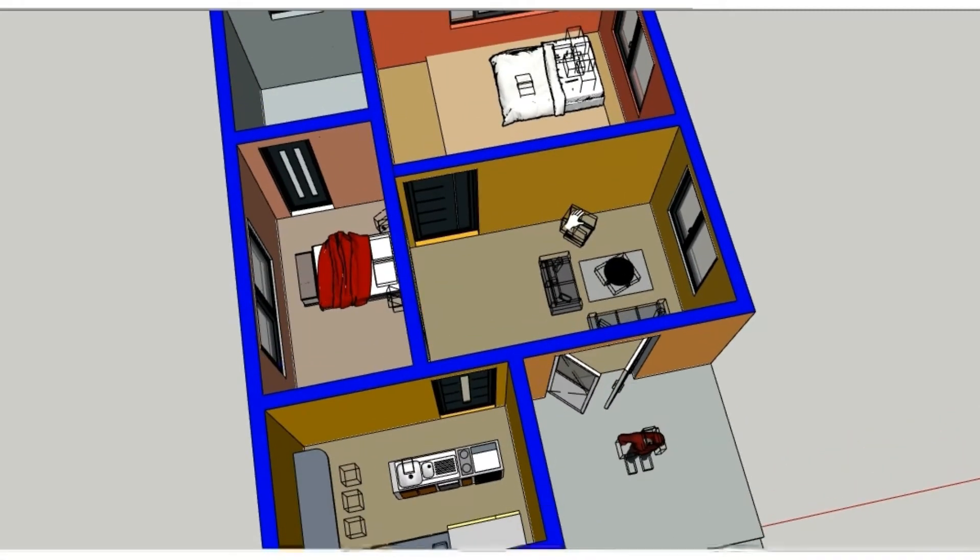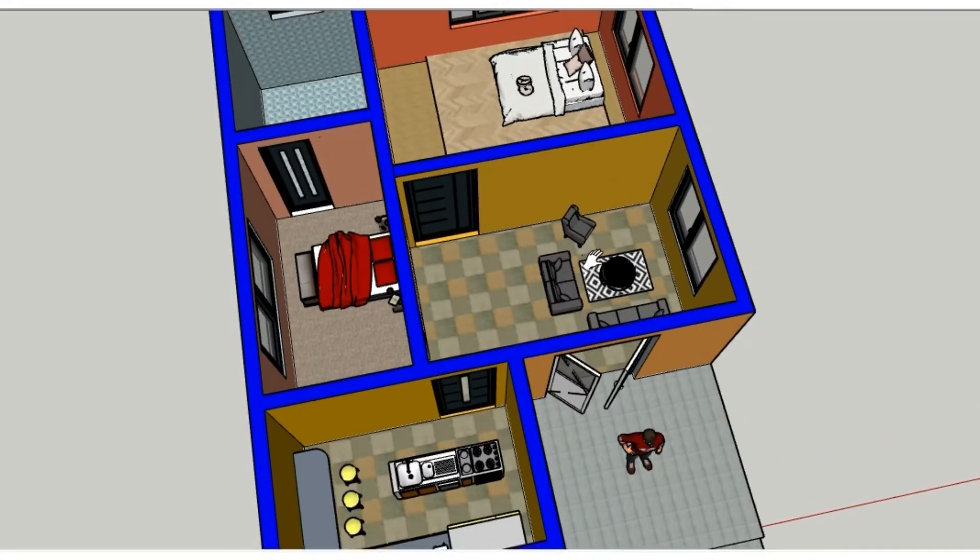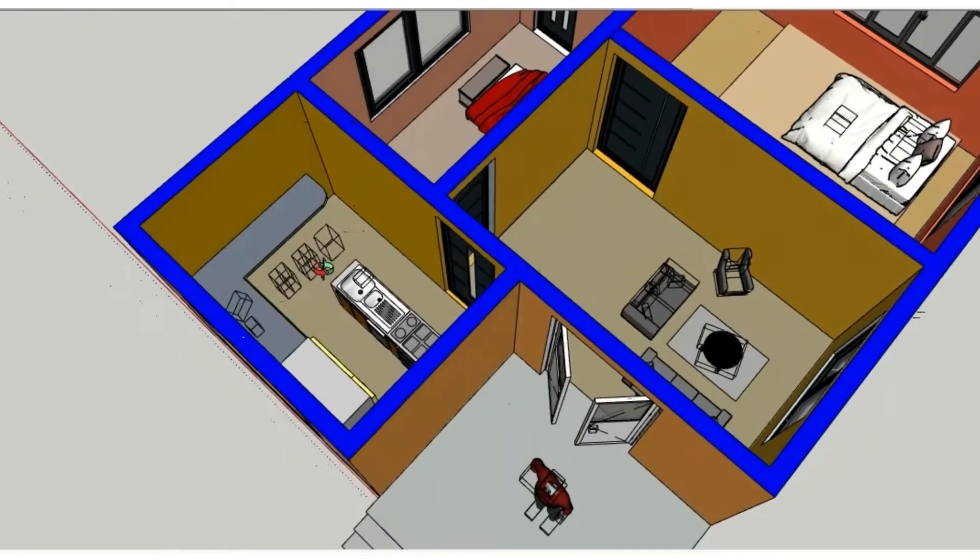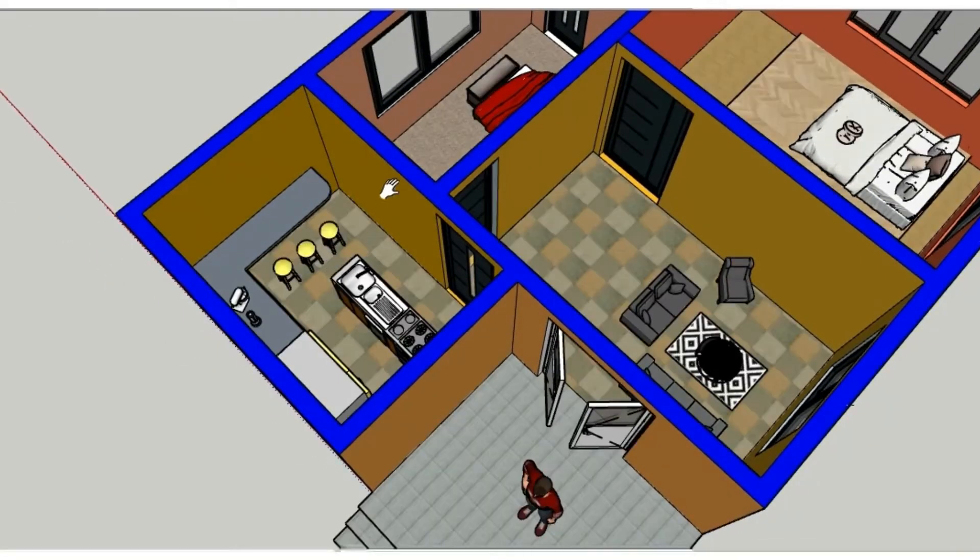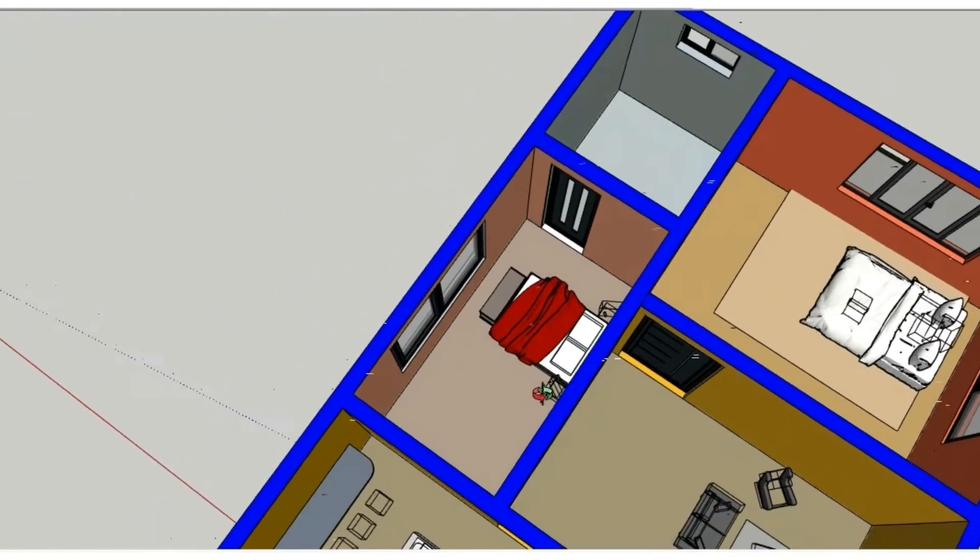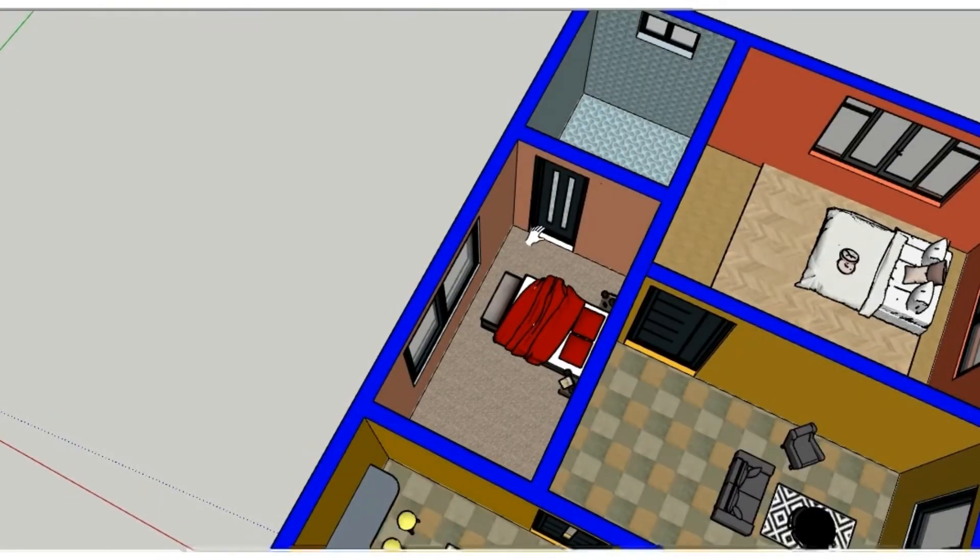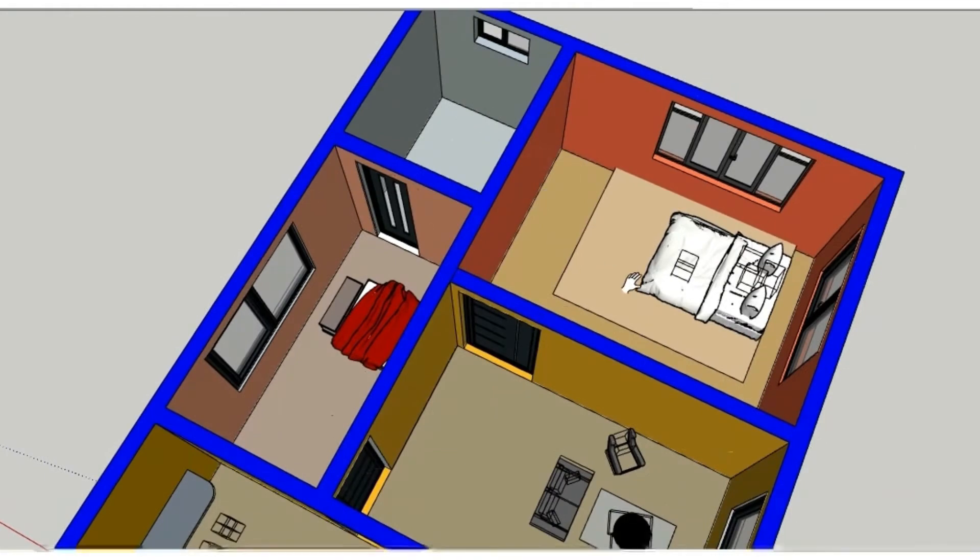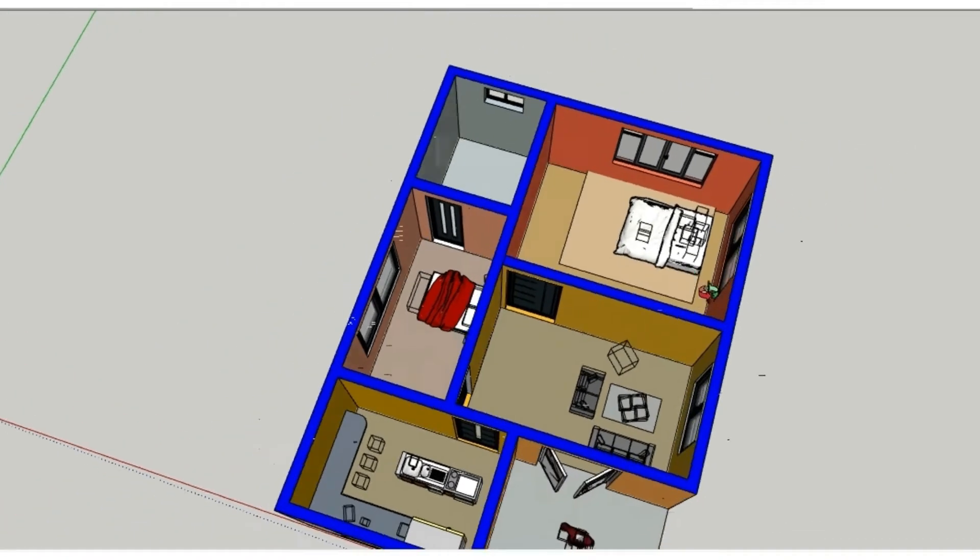At this point we have sofa set for living area and then here we have our kitchen. This is our kitchen. This is bedroom number one or first bedroom with this bathroom and here we have this another bedroom.